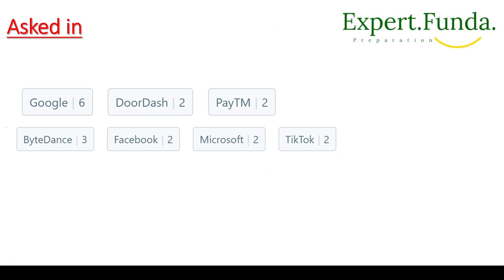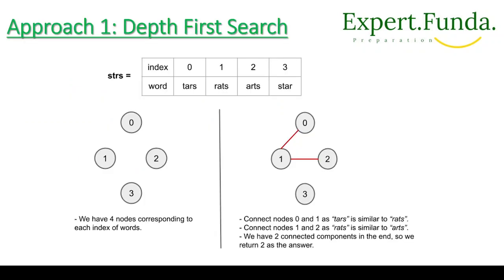This question is very important — Google has asked it six times, along with Paytm, Facebook, and Microsoft. These are top companies, so this question is clearly important. We will understand how to return the number of such groups that will be formed using DFS — depth-first search — which will go to its full depth.